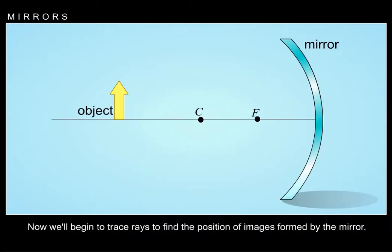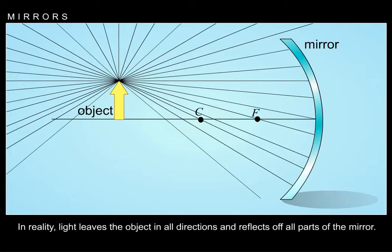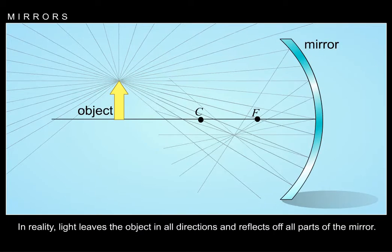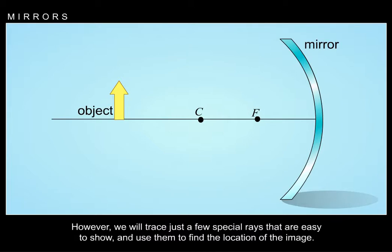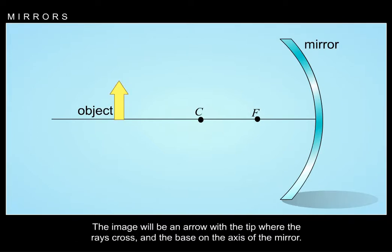Now we'll begin to trace rays to find the position of images formed by the mirror. In reality, light leaves the object in all directions and reflects off all parts of the mirror. However, we will trace just a few special rays that are easy to show and use them to find the location of the image. It is convenient to use an arrow as our object. The image will be an arrow with the tip where the rays cross and the base on the axis of the mirror.